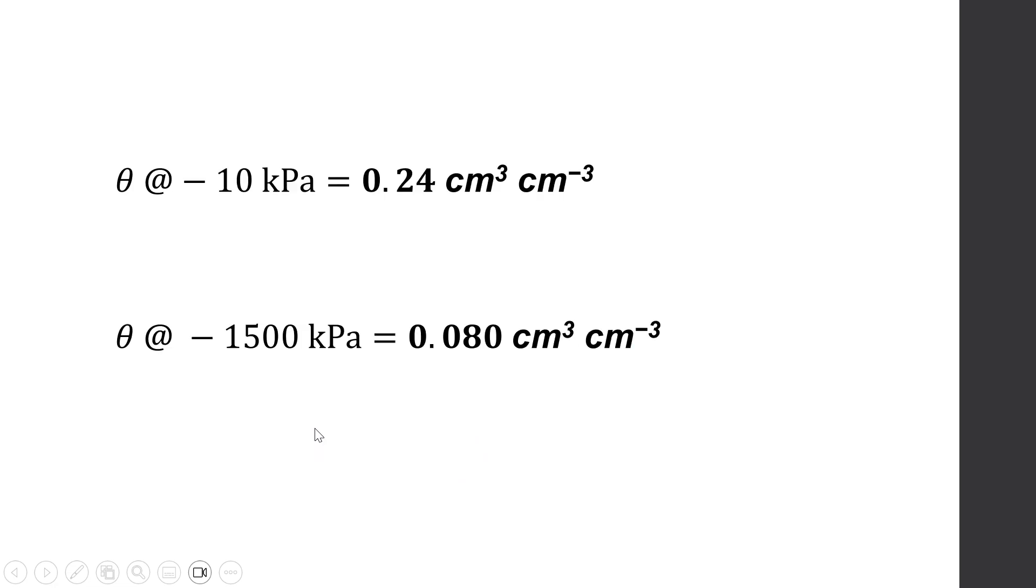Note that there is a significant reduction in the volumetric water content of the same soil at minus 10 kPa and minus 1500 kPa from 0.24 cubic centimeter per cubic centimeter to 0.080 cubic centimeter per cubic centimeter. So the reduction in the moisture content reduces the matric potential of the soil. That is, the matric potential becomes more negative.